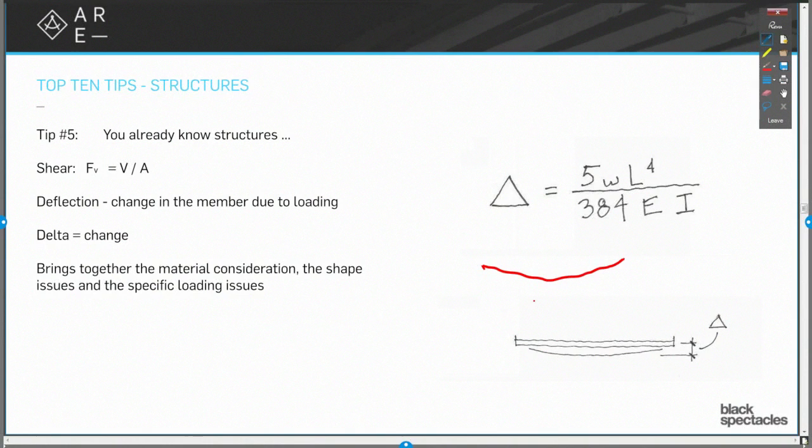So, we look at it. The 5 and the 384 are just constants. Who cares about them? They're there. Whatever. You don't need to worry about those. The W, that's the weight. The L, that's the length of that beam. The E and the I, we just talked about. That's the modulus of elasticity and the moment of inertia.